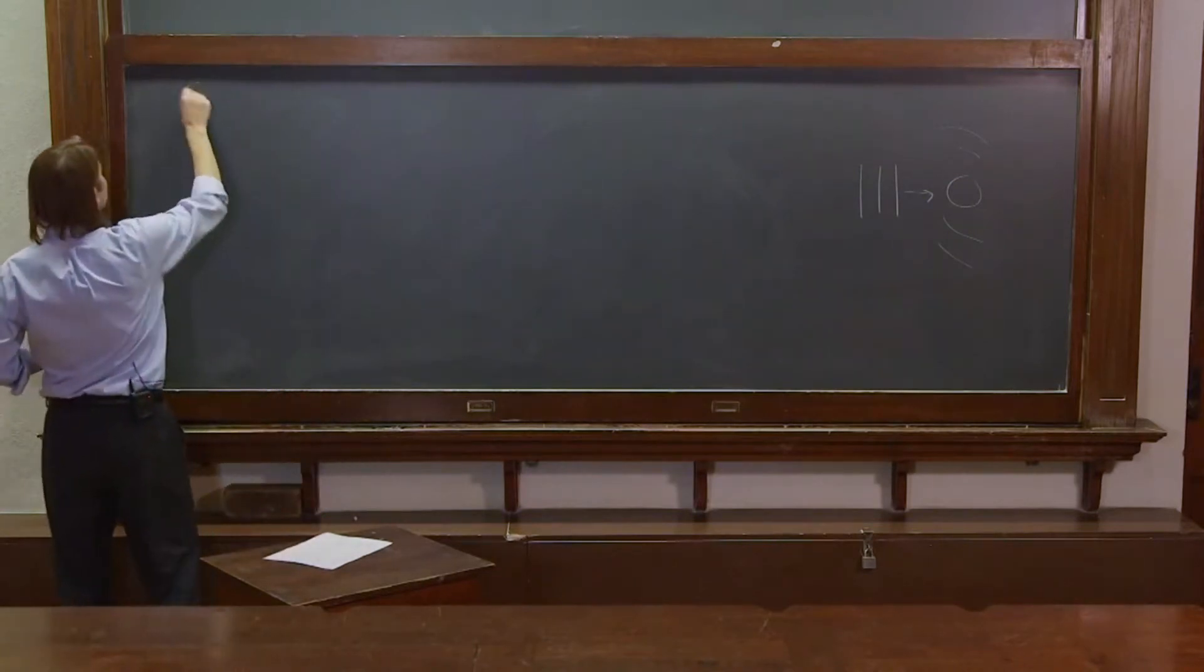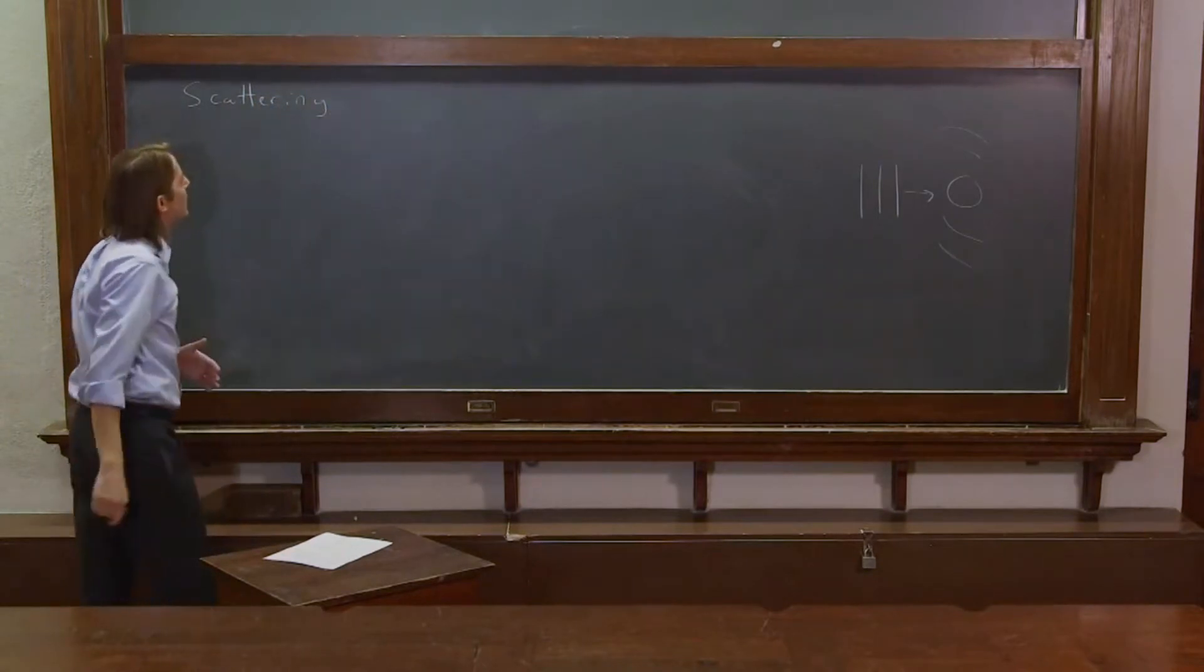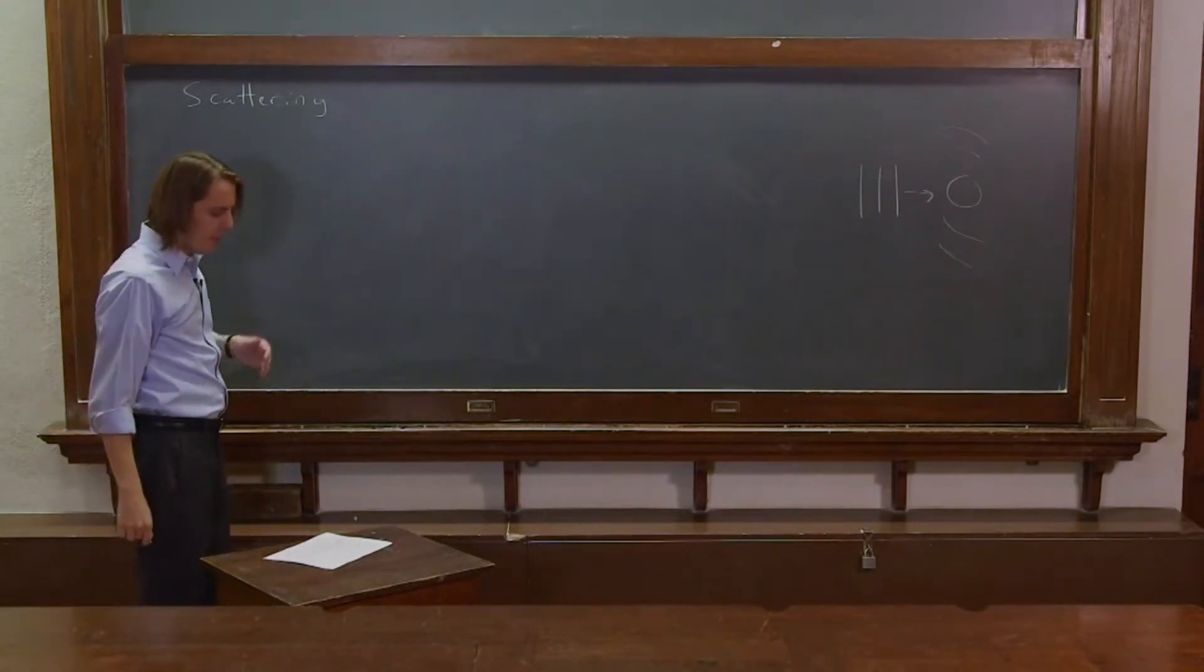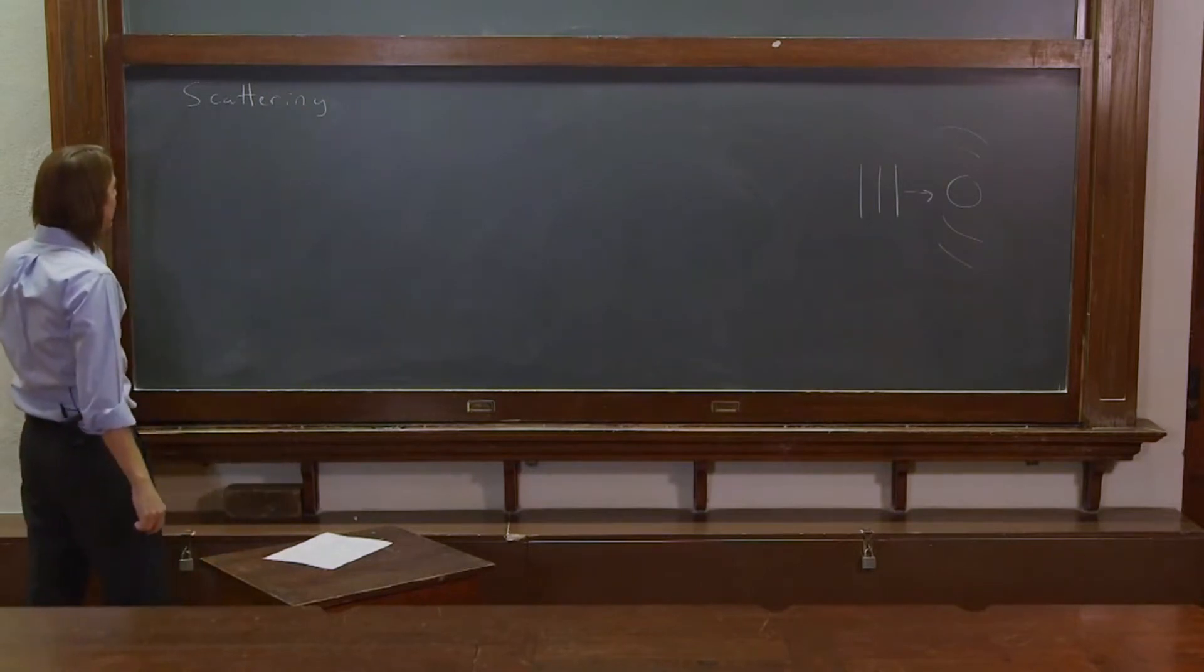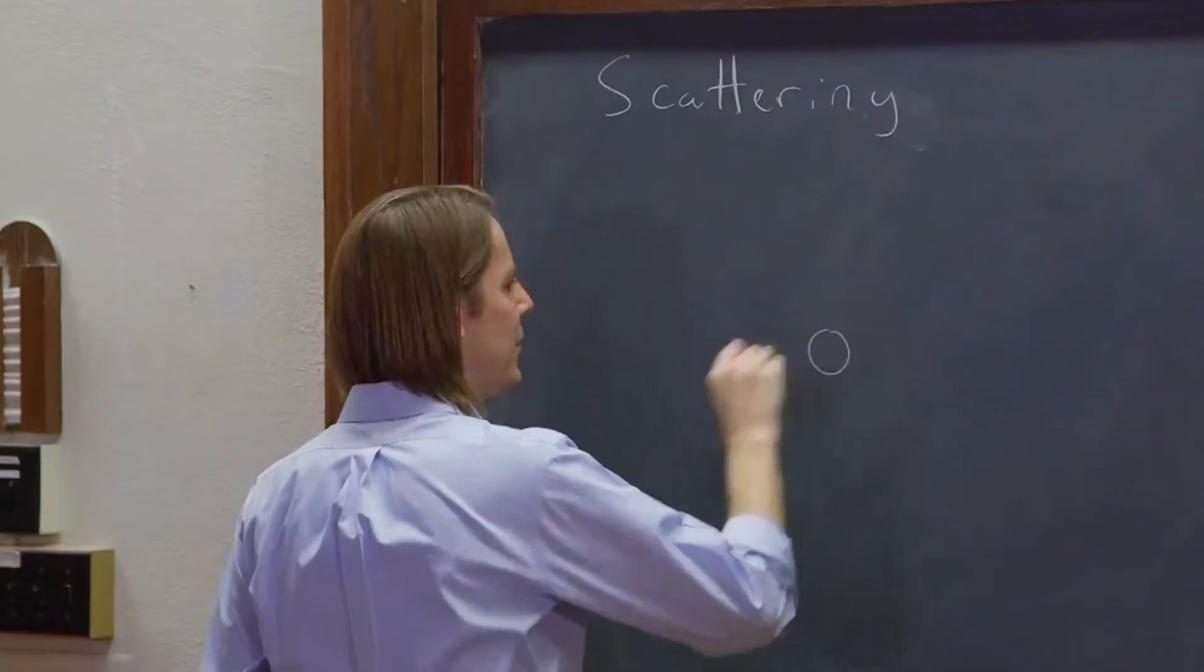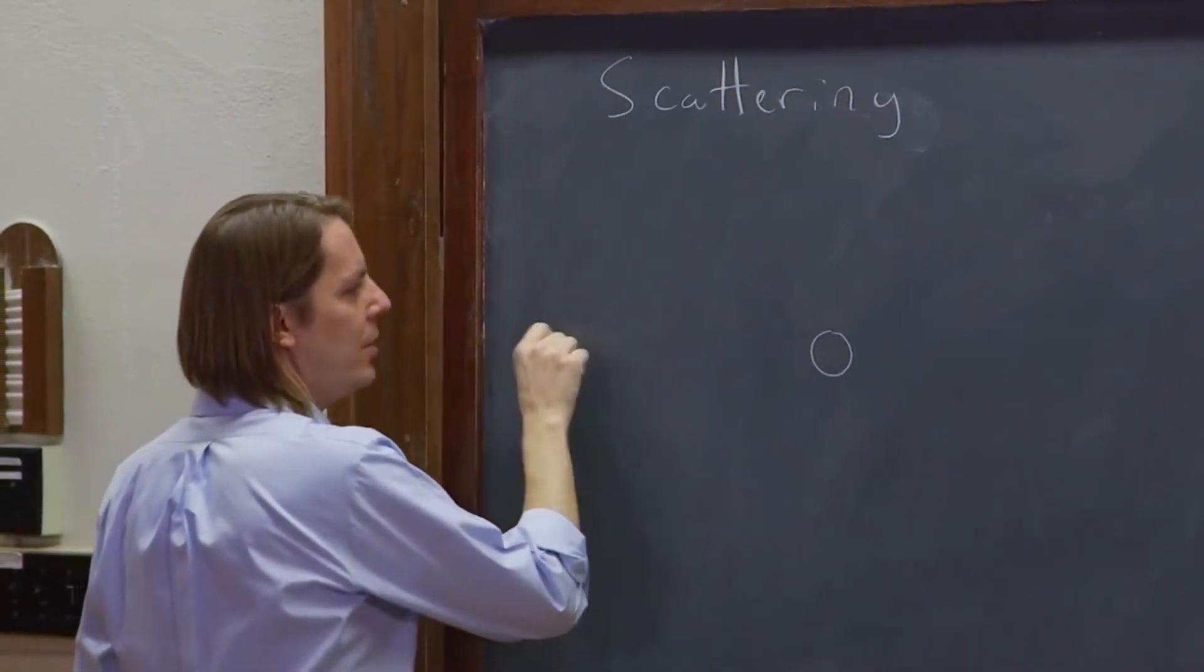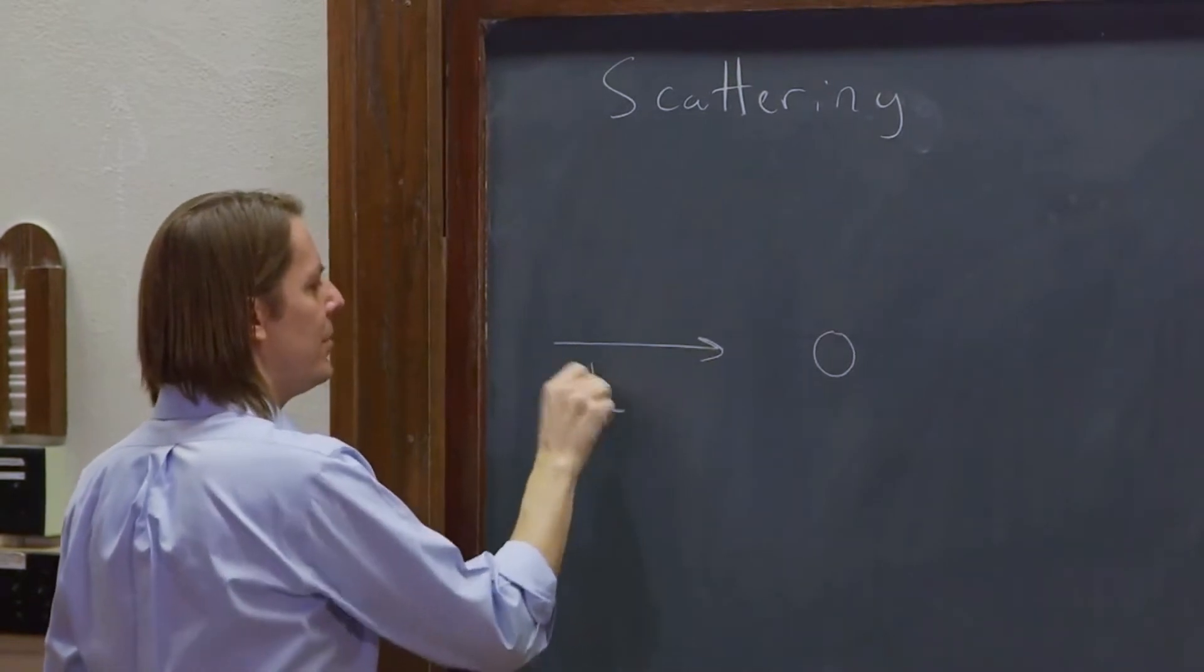So let's look at a simple case, the simplest case we can, of electromagnetic scattering. We're going to think about a little particle, let's pretend it's glass, a little piece of glass. And we're going to have a plane wave come along at some k-vector like that.